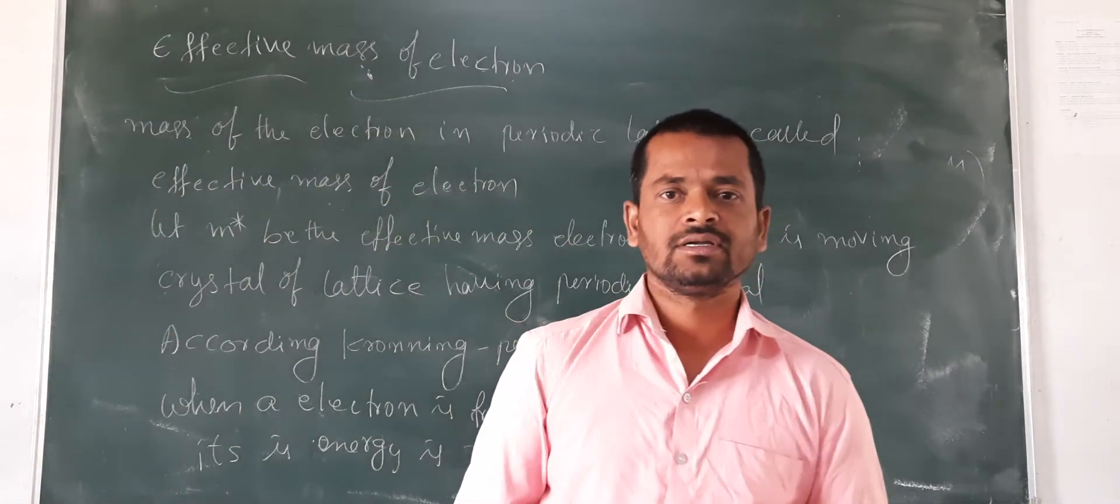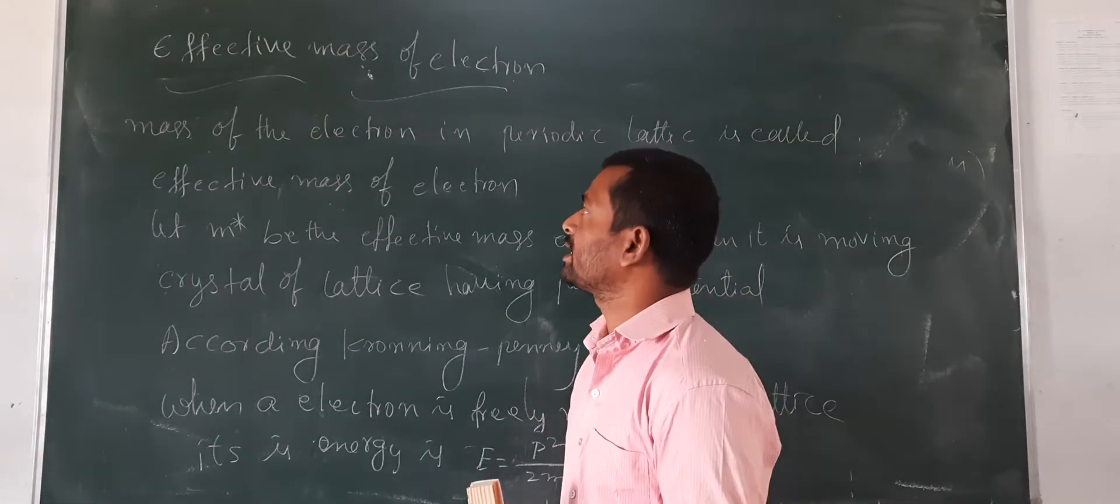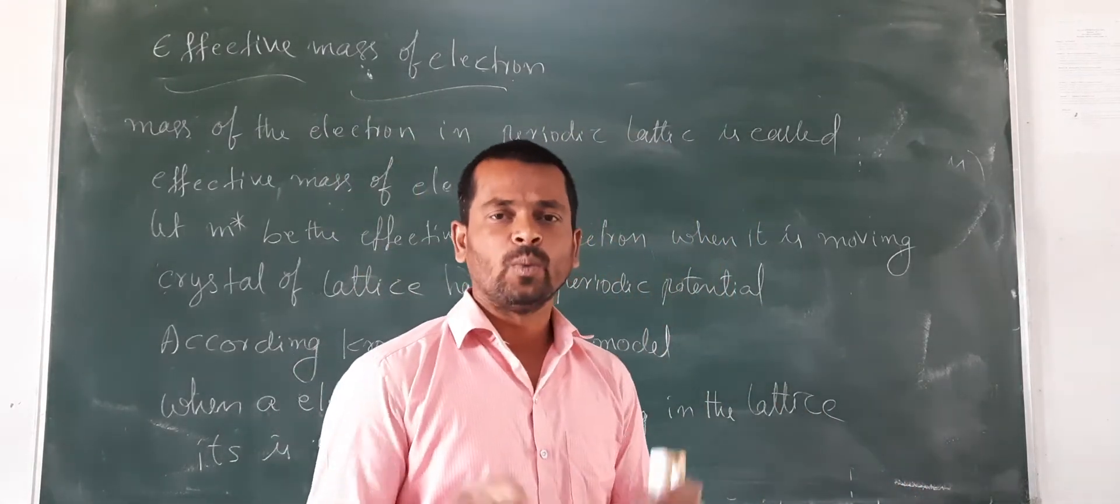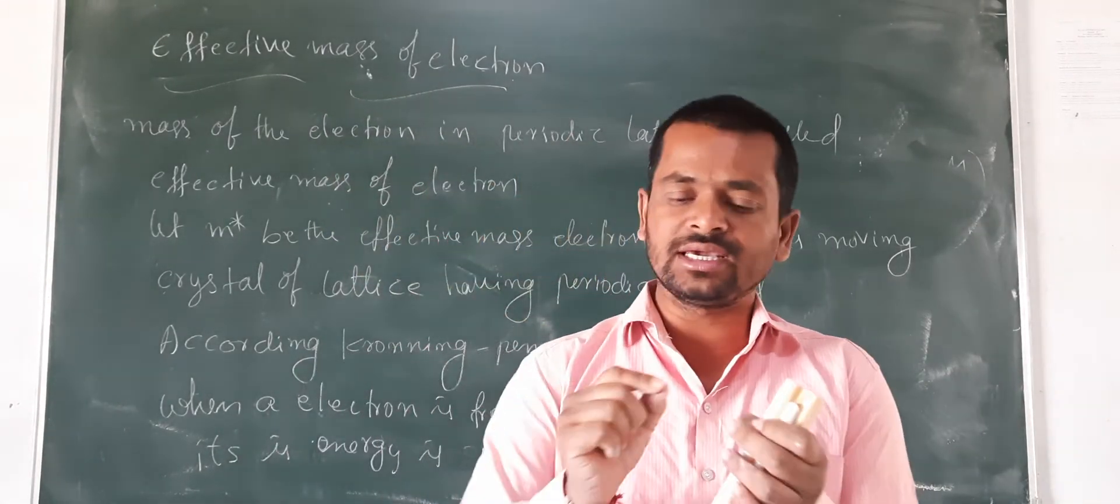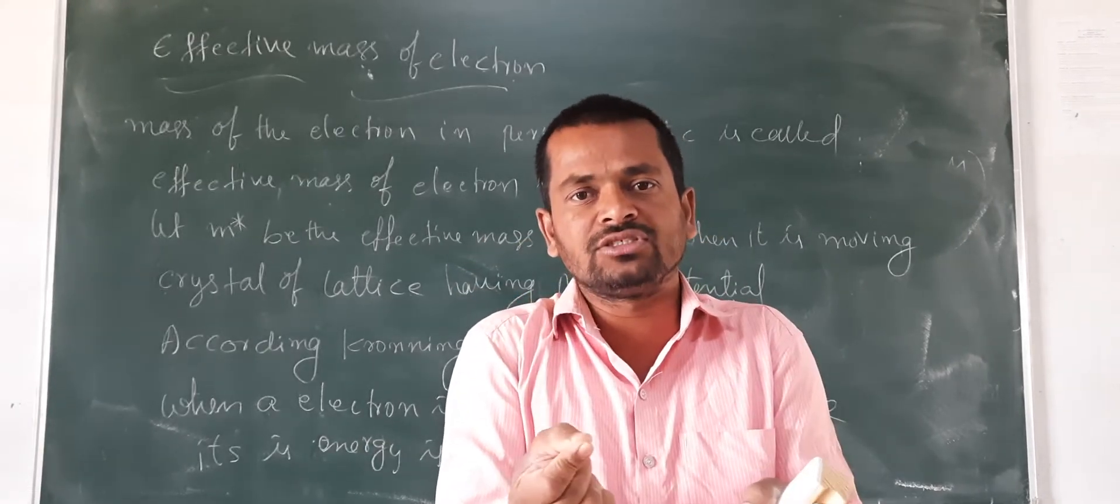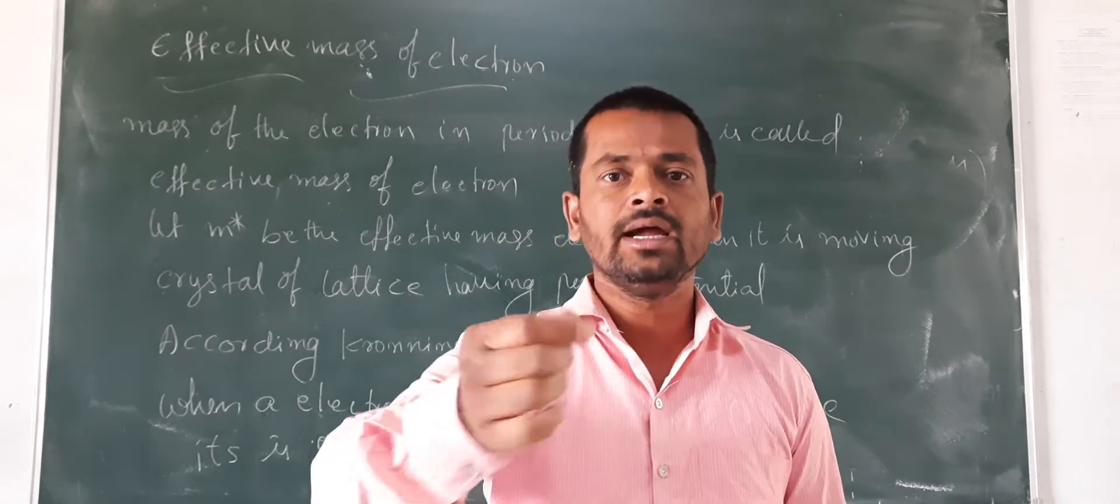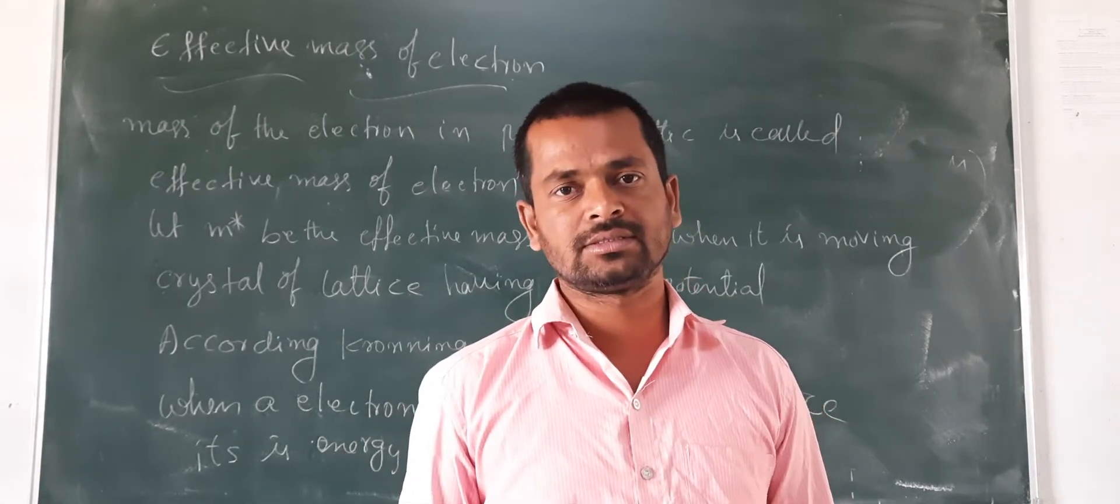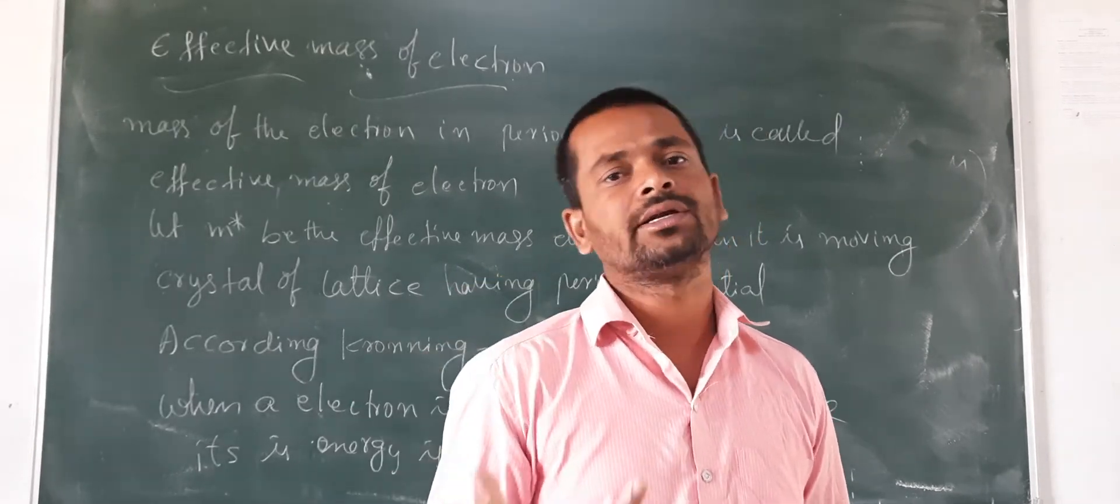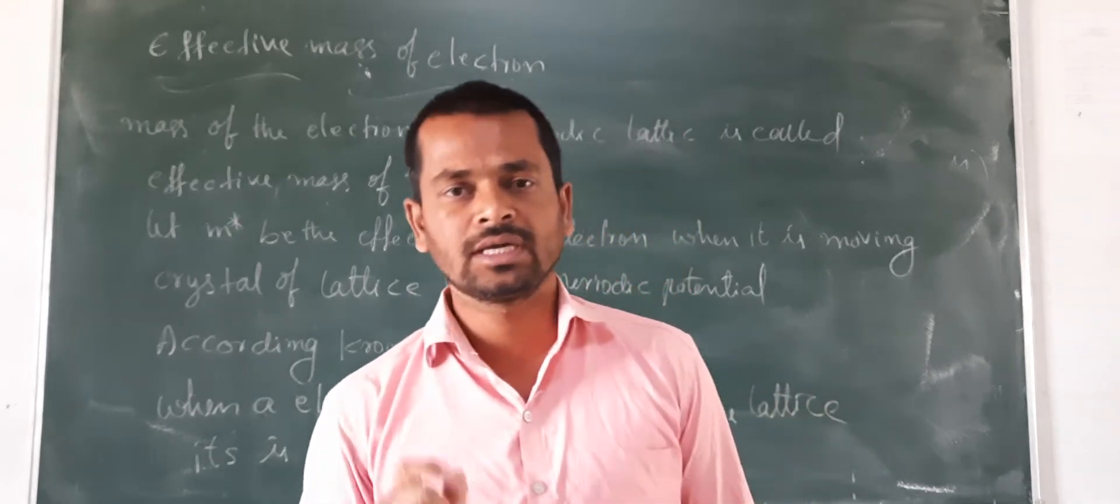Hi viewers, today I have come with a new topic that is effective mass of electron. That means when an electron is moving in a crystal which is having periodic potential, its mass may be changed and it depends on some other factors. So what all factors it depends on and what is its equation, that is we have to calculate now.